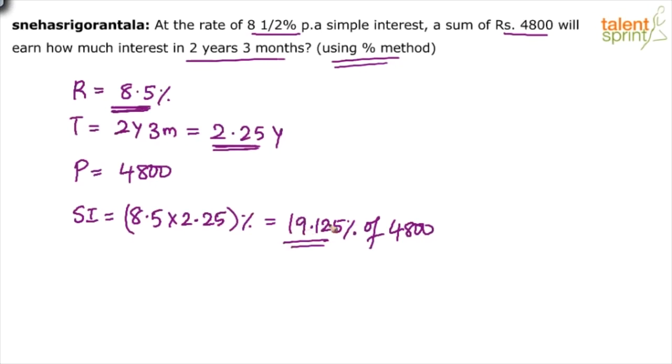Don't try to do it on paper again. Don't multiply 19.125 into 48 and all this drama. It's not needed. What do you do? Do it using split and merge. Right?